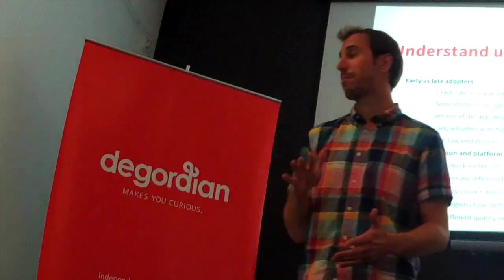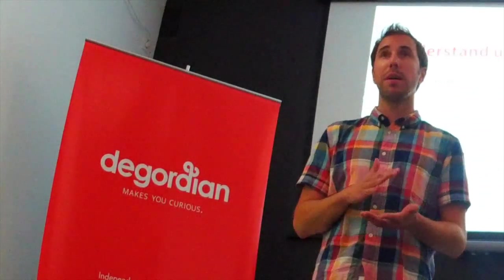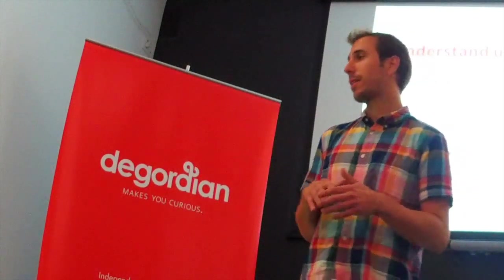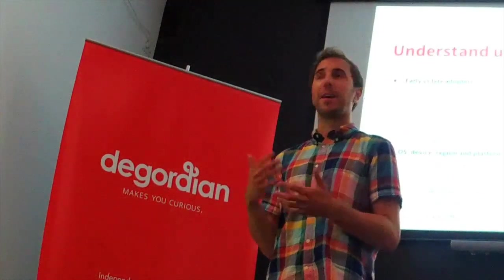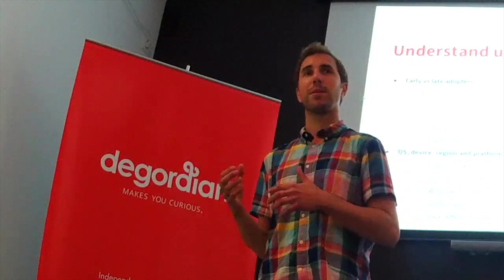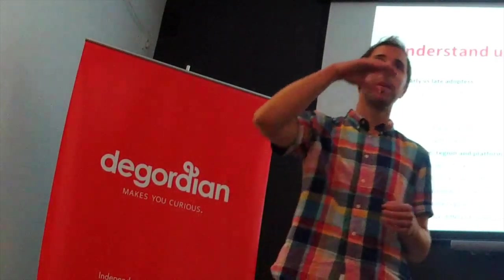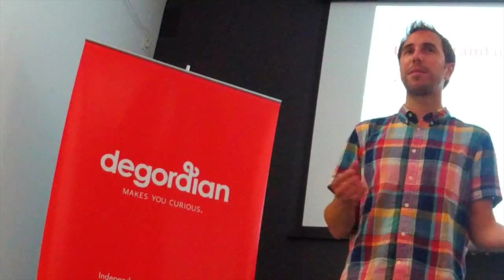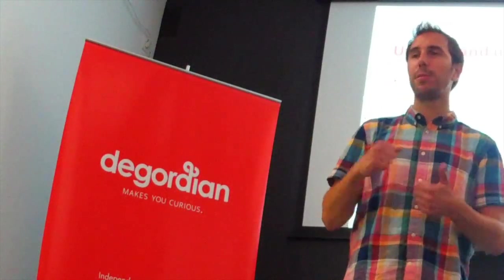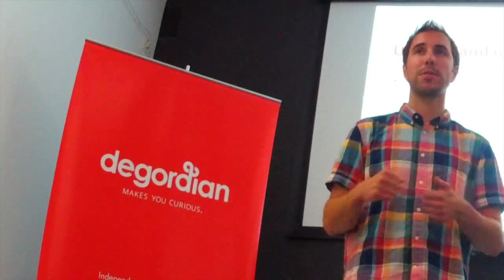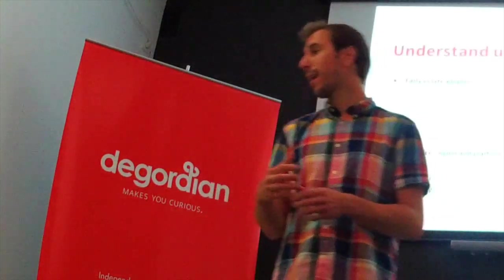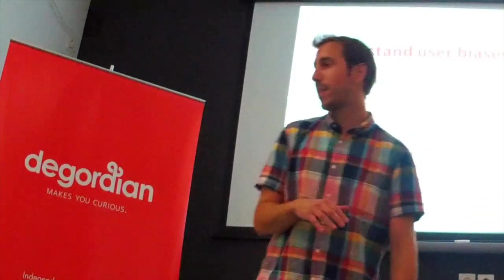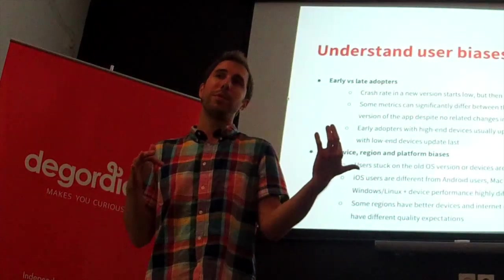Another important thing is user bias — not all users are the same and they don't behave the same way. You have early and late adopters. When you release a new version, you'll see some metrics go up and improve, then after some time they drop off and stabilize to the previous state. Early adopters are more eager to update, they're power users with better devices and better performance. Then when the late majority and late adopters come — who may have lower-end devices — it stabilizes back to your previous app version's level.